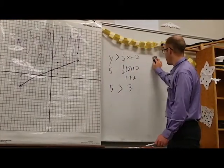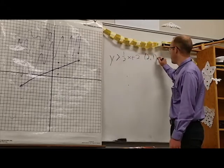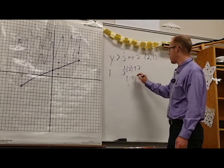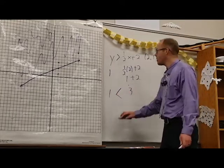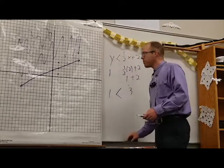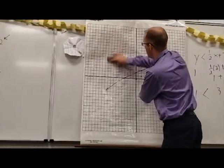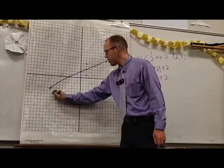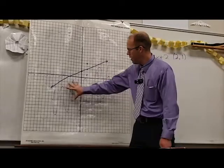Let's test out our next point, two-one. We have one on the left, and one-half times two plus two gives us one plus two, which is three on the right. We can see that one is less than three, so that fits if instead of a greater than symbol we have a less than symbol. That's going to be true for all of the points below the line. So if we're graphing less than, we shade all of the points below.